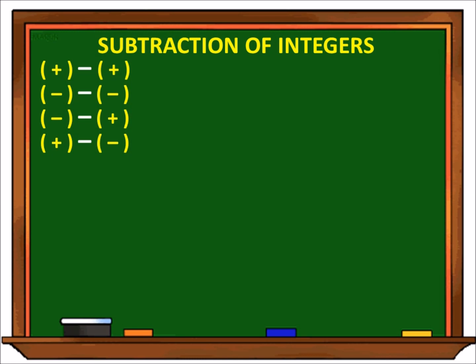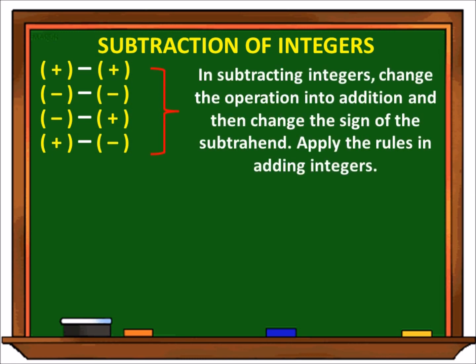Halimbawa: positive minus positive, negative minus negative, negative minus positive, positive minus negative. The rule is: in subtracting integers, change the operation into addition and then change the sign of the subtrahend. Then apply the rules in adding integers. Ang gagawin natin dito ay babaguhin natin yung operation mula sa subtraction, gagawin natin siya ang addition, at babaguhin natin yung sign ng subtrahend — halimbawa, from positive gagawin natin negative, or from negative gagawin natin positive. Then i-apply lang natin yung rule sa pag-add ng integers.